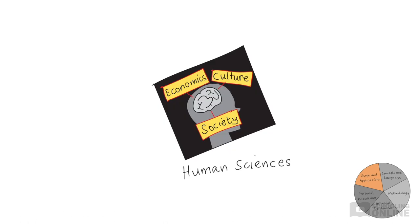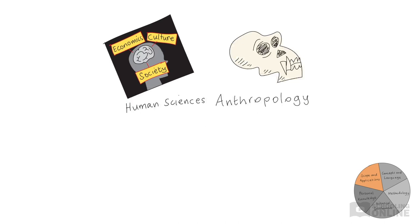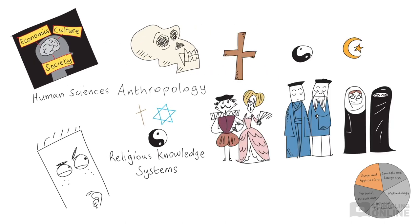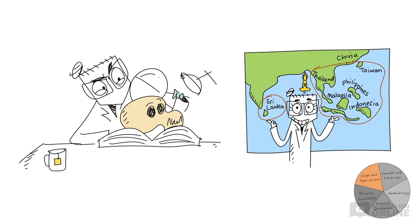He highlighted that the adoption of universal conscription — the compulsory enlistment of men for military service — provided national armies in Europe with a mass of manpower that could be directed towards war. Some human sciences, such as anthropology, can help us understand how religious knowledge systems came to be, how they changed over time, and how they affect human experiences. Anthropologists study human culture, society and its development, and have compared Buddhist beliefs and practices in different countries, such as Sri Lanka and Southeast Asia.